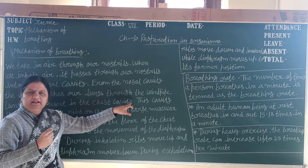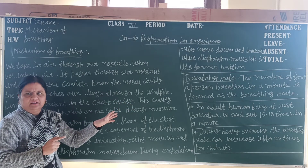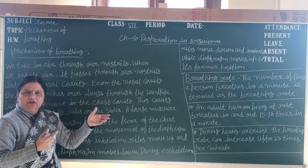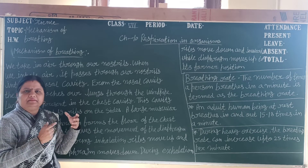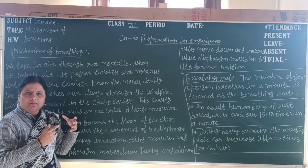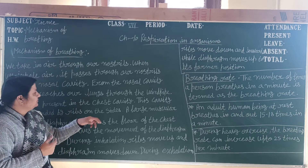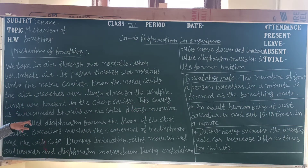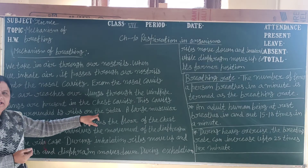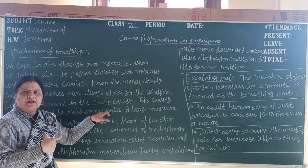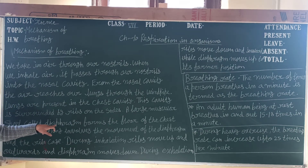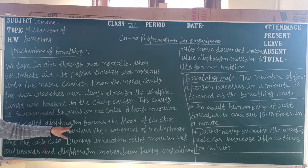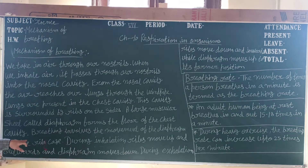That is why when we are eating food, we should not talk, because it is possible for food to go into the windpipe instead of the food pipe, which can prevent proper breathing and may cause damage. The chest cavity is surrounded by ribs on the sides. A large muscle called the diaphragm, which is another organ in the respiratory system, forms the floor of the chest cavity.